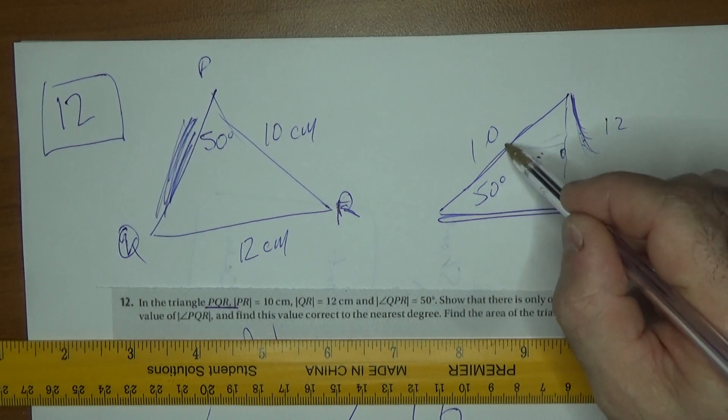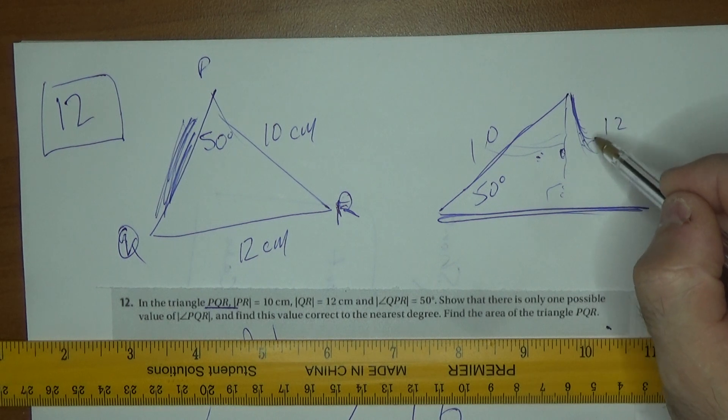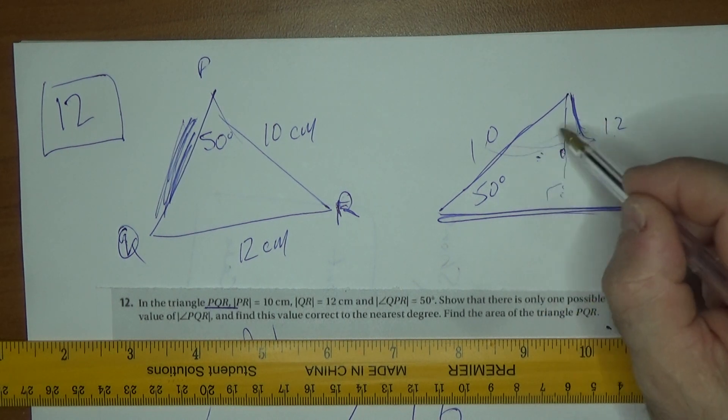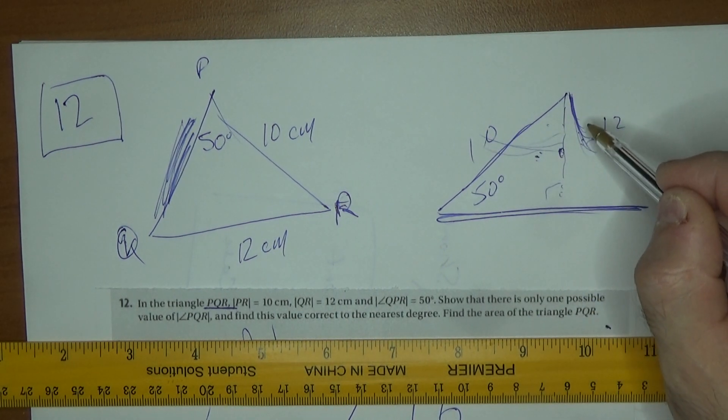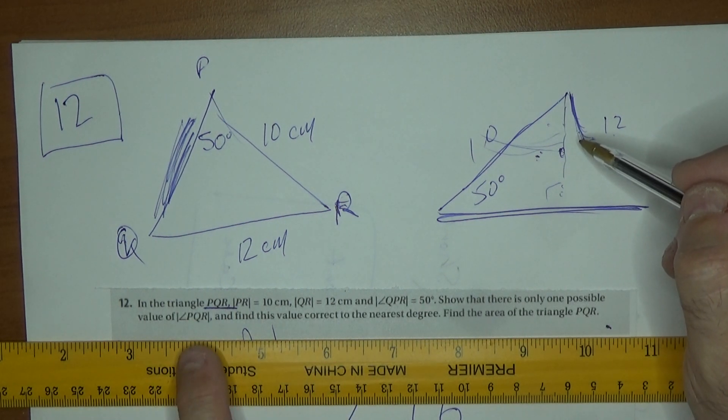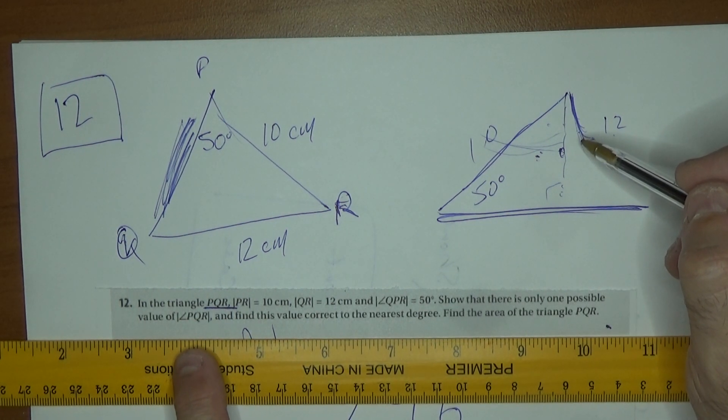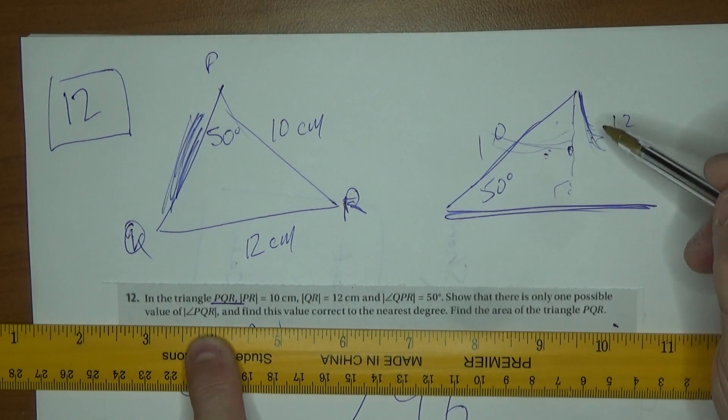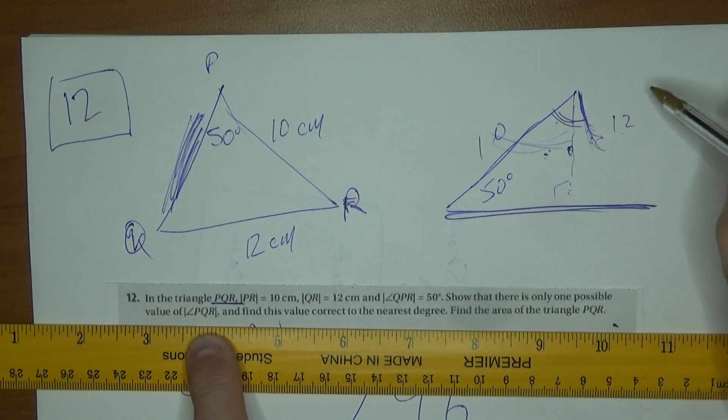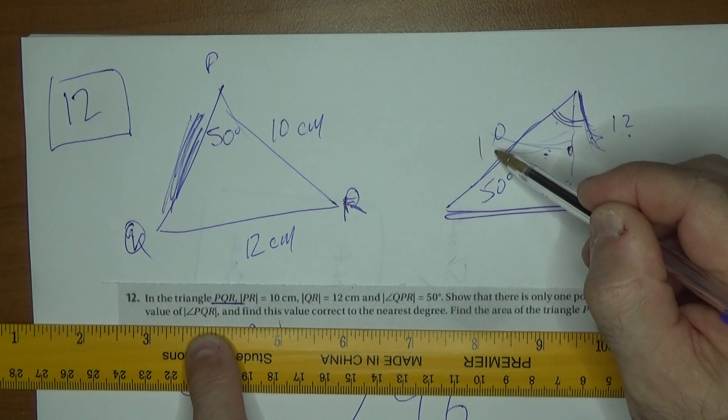Because if he came this way, he'd have to go 12 is longer than 10, not shorter than 10. So this angle can't be 2 angles. I presume they didn't ask me for this angle though. If we look at it, oh, show that there's only one possible value of Q. Of course there's only one possible value of Q, because this is larger than this.